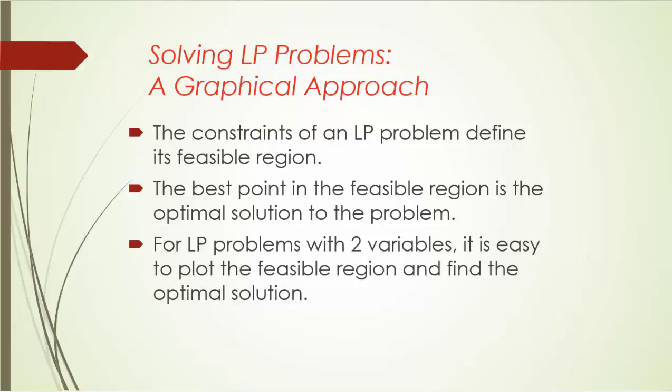Now let's talk about solving a two-variable LP model graphically. Recall that the constraints of an LP problem define its feasible region, and the best point in the feasible region is the optimal solution to the problem. Thanks to the fact that there are only two decision variables in our Blue Ridge example, we can easily plot the feasible region and find the optimal solution.